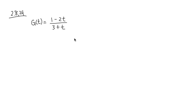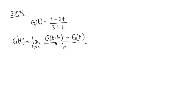Problem 2.8.29. Our function is g of t equals 1 minus 2t over 3 plus t. We are going to use the definition of derivative, which is the limit as h approaches 0 of g of t plus h minus g of t, over h.